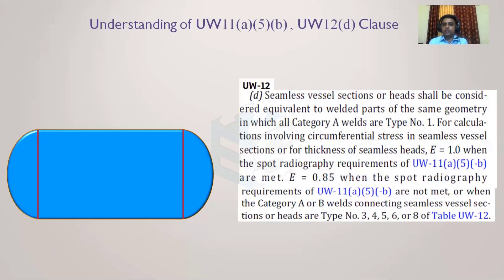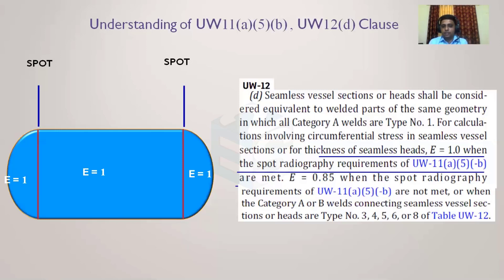For calculations involving circumferential stresses in seamless sections or for the thickness of seamless heads, E should be taken as 1. The joint efficiency for seamless shell and seamless head should be 1, but there is one requirement: when the spot radiography requirement of UW-11a5b is met. So if the junctions between the shell and the heads are at least spot radiographed, we can consider joint efficiency as 1 for seamless sections.